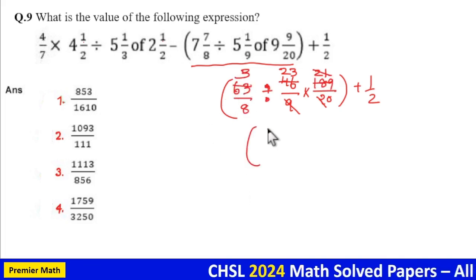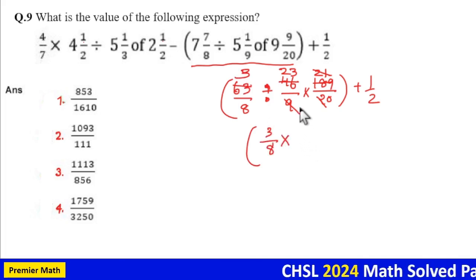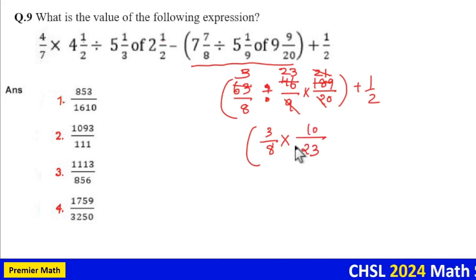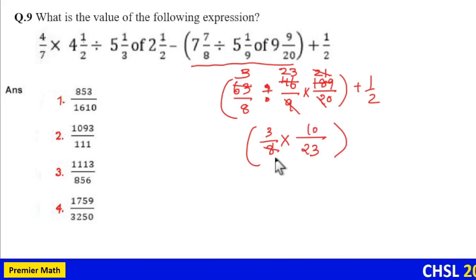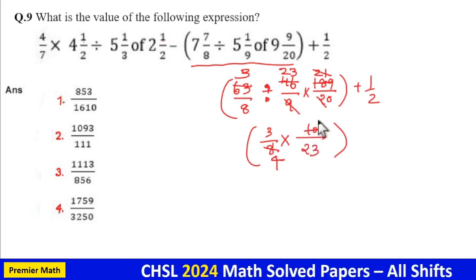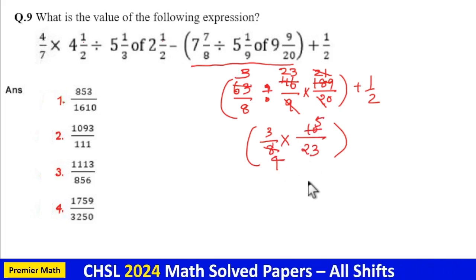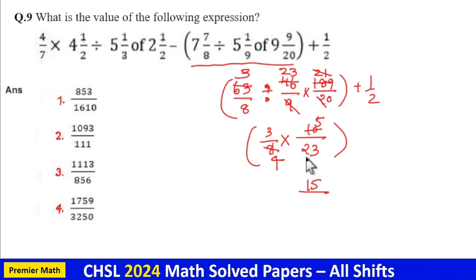Now this will become 3 by 8. Division I will write it as into, then into 10 by 23. Now this is equal to 2 goes 4 times in 8, 2 goes 5 times in 10. So 15 by 4 into 23.